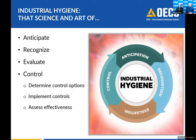Those two areas — anticipation and recognition — are really focused on getting a good understanding of the work: how it's performed, what types of tools, equipment, machines, and raw materials are involved. Getting that good understanding will help you determine what else needs to be evaluated. When we evaluate things, we may not immediately recognize a serious hazard. It may require air monitoring or noise monitoring to give us a better sense of whether we need to focus on that area and implement further control measures.